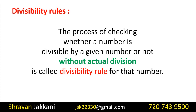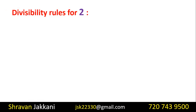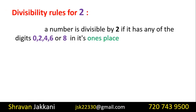This is the Divisibility rule of 2. A number is divisible by 2 if it has any of the digits 0, 2, 4, 6, or 8 in its ones place. So, if the number ends in 0, 2, 4, 6, or 8, then the number is divisible by 2.